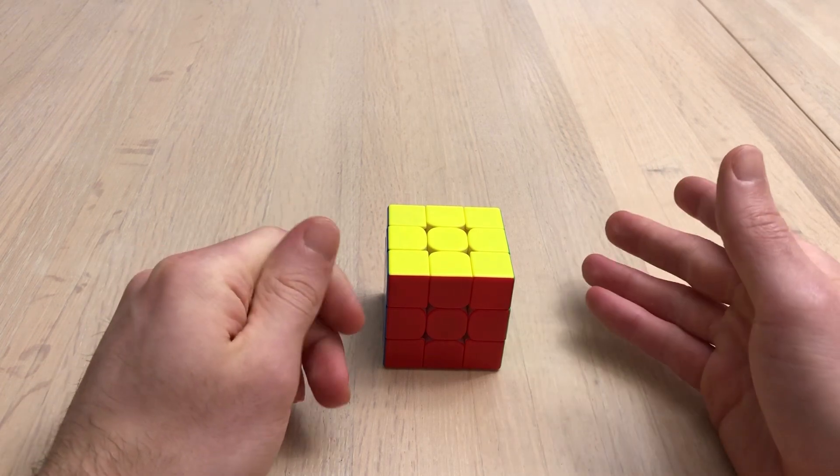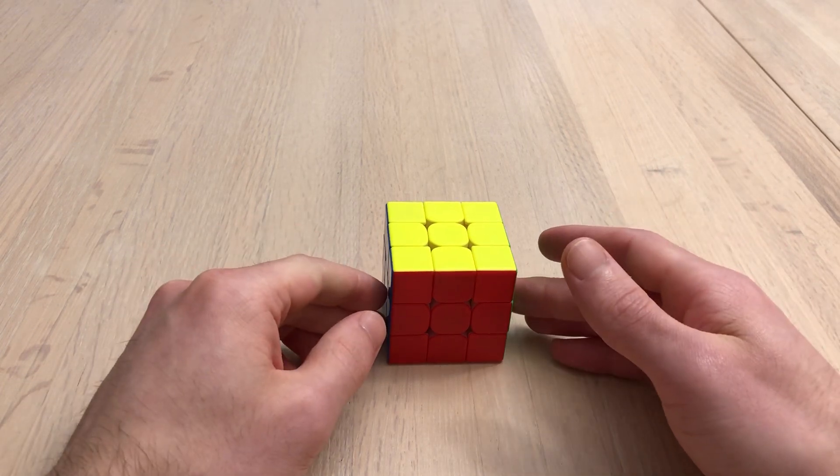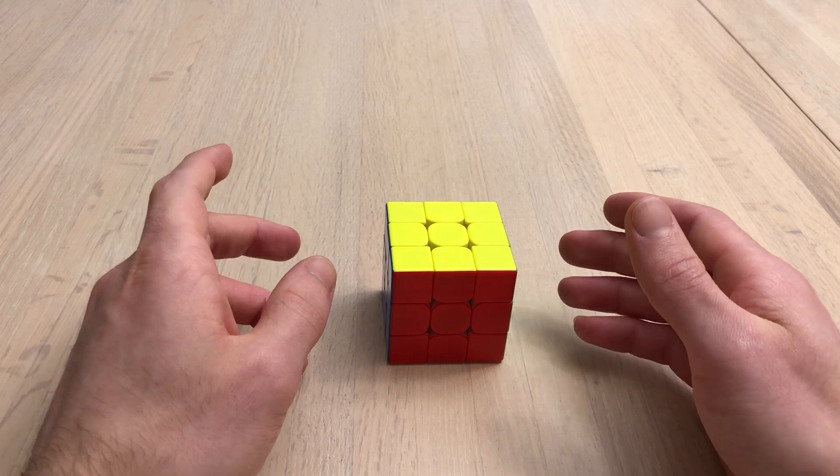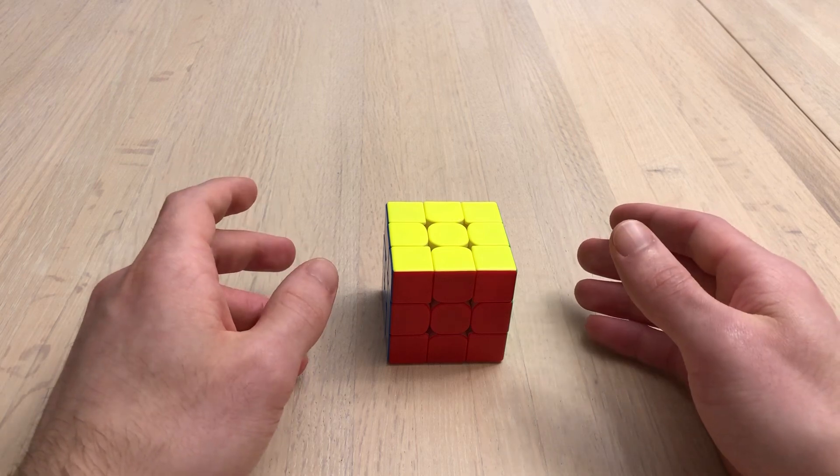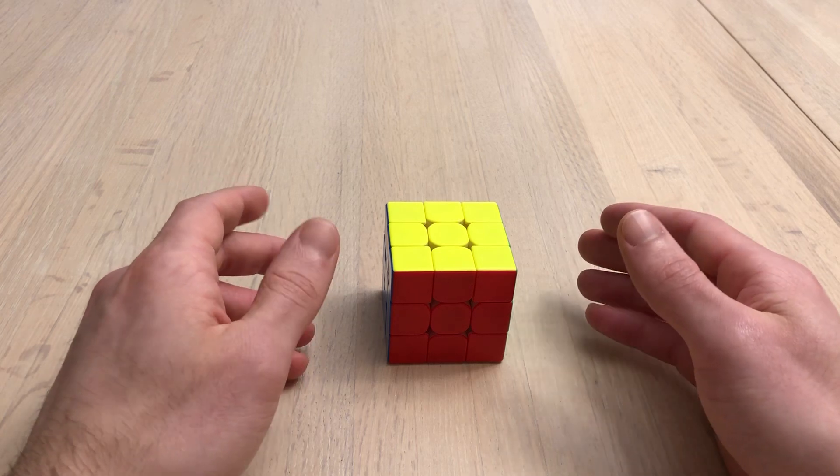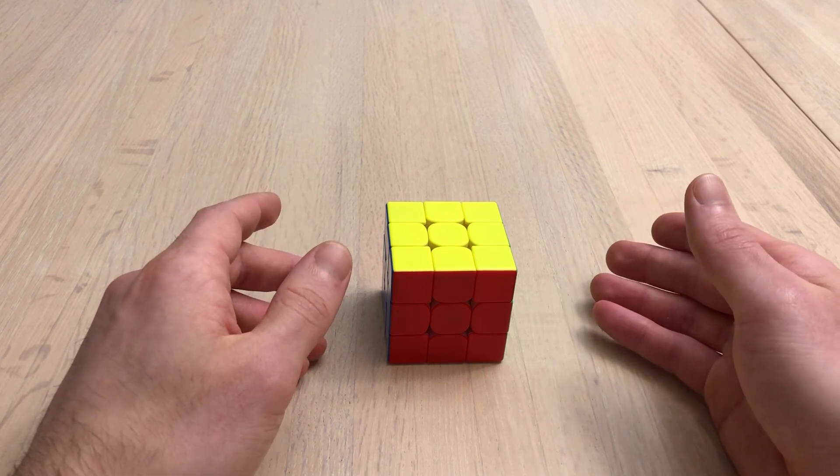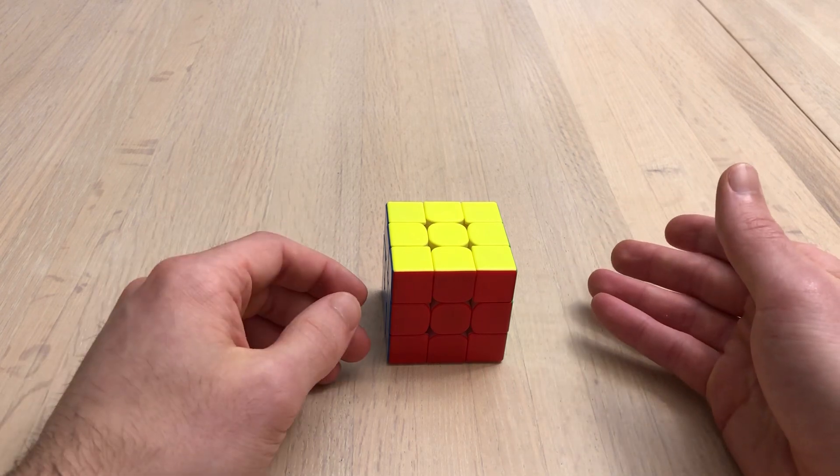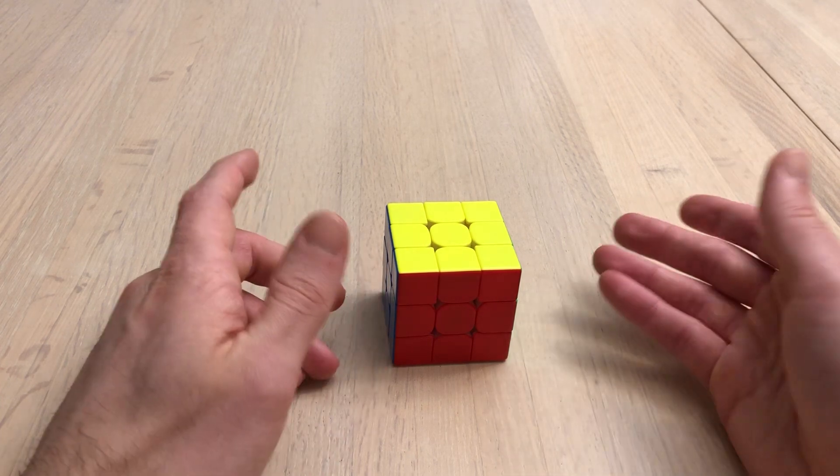But some of these advanced alg sets, such as COLL, ZBLL, the algorithms aren't very good. And it's sometimes just better to do classic OLL PLL, which, for example, Max Park uses and he's had tons of world records.